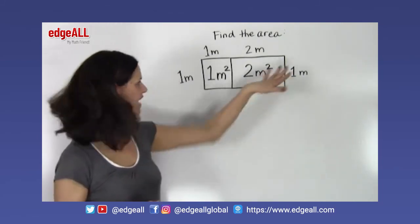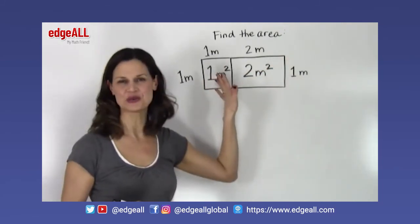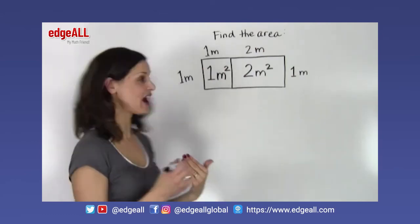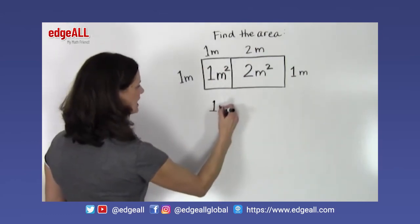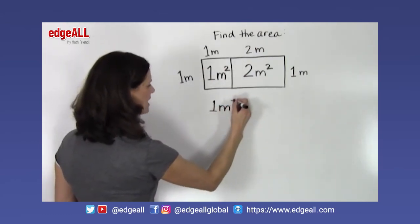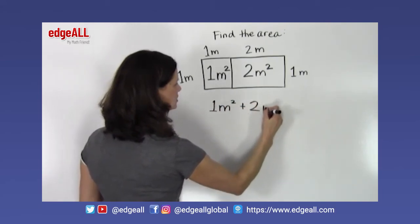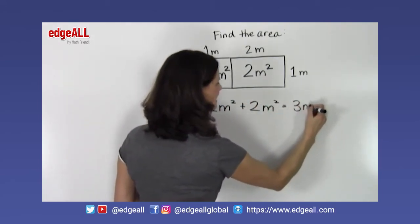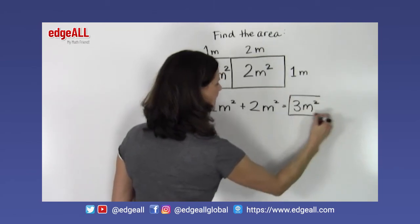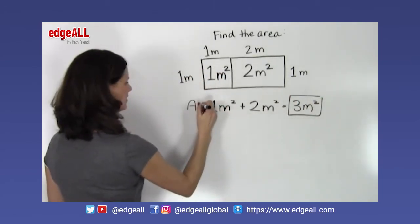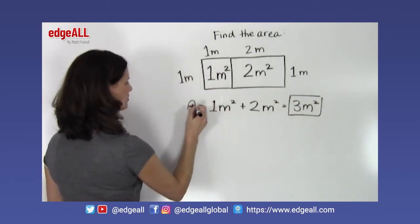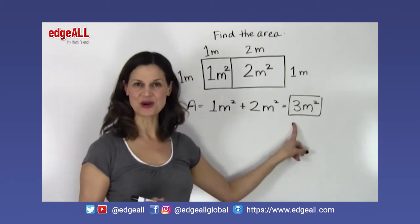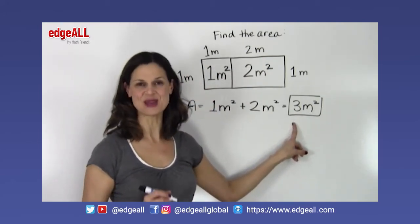To find the area of the larger rectangle, we simply add those two areas together: 1 square meter plus 2 square meters gives us 3 square meters. The area of this larger rectangle is 3 square meters, or 3 meters squared.